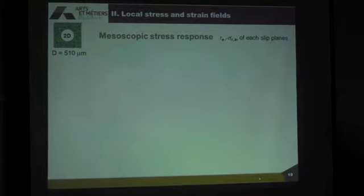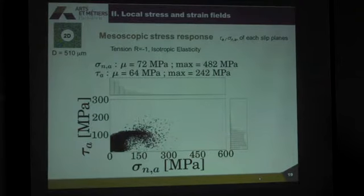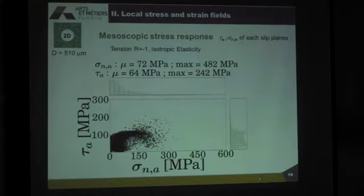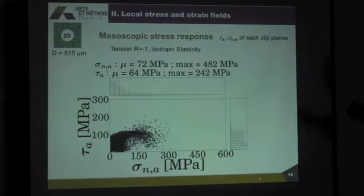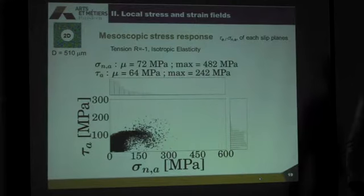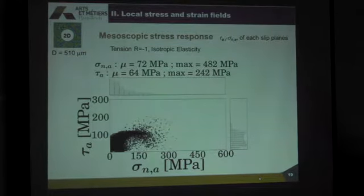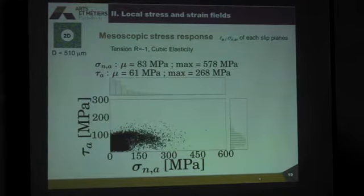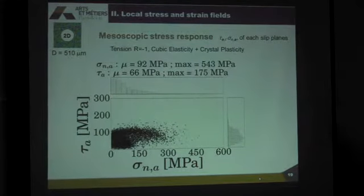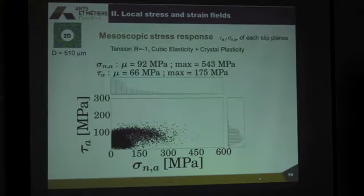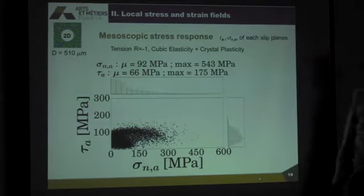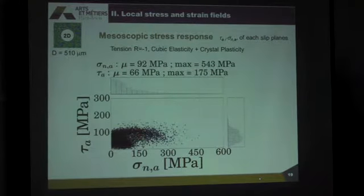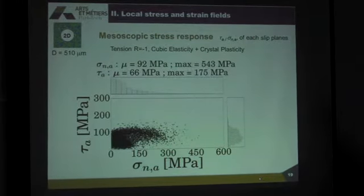Now, I'm going to do the same in the presence of a defect — a defect of 500 micrometers. I start with the isotropic elasticity — I get that kind of distribution. When I add the cubic elasticity, the scatter increases. And when I add the crystal plasticity to the cubic elasticity, you see here a kind of saturation for the shear stress. It's due to the model we used in particular.